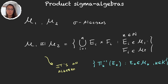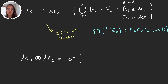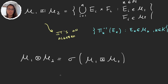So let's move on. We have an algebra, and we want to define a sigma-algebra. We just do the usual thing: we define the product sigma-algebra m1 ⊗ m2 as the sigma-algebra generated by this algebra. Of course, the sigma-algebra generated by anything is a sigma-algebra, so this is indeed a sigma-algebra.